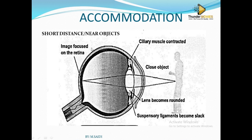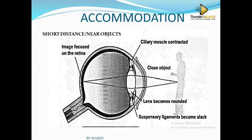We have two kinds of objects: the object which is near, which we call the short distance or near object, and the object which is far, which we call the far or distant object. If the object is more than six metres away, we say that object is far. If the object is less than six metres from the eye, we say that object is near.